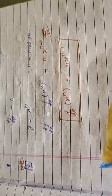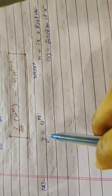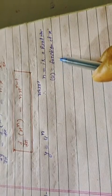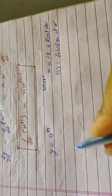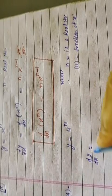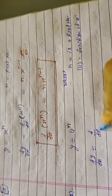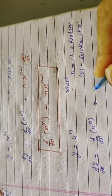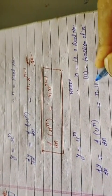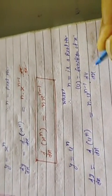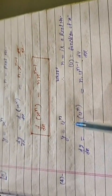Next formula, fourth: if given y equals uⁿ, where n is a real number and u is a function of x. Now we differentiate: d upon dx of uⁿ. The power n comes down: n · u^(n−1), and since u is a function of x, we also differentiate u — multiplied by du upon dx. This is how we differentiate this formula.